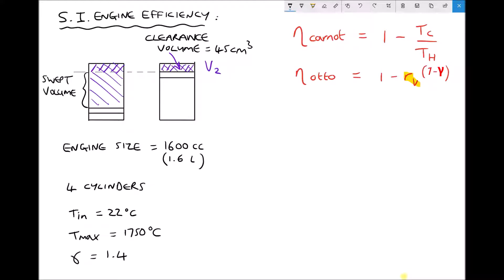We have a way of determining the swept volume from information about our engine. Our engine has an engine size of 1600 cc or 1.6 liters. CC means centimeters cubed. The engine size is the amount of air the engine can draw in every cycle. If we have 1600 cc and four cylinders, then each cylinder is drawing in 1600 divided by 4, which is 400 centimeters cubed every cycle.